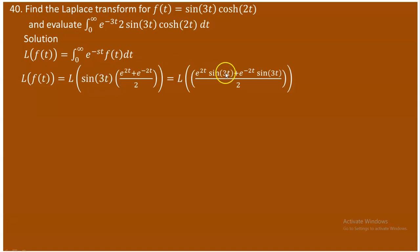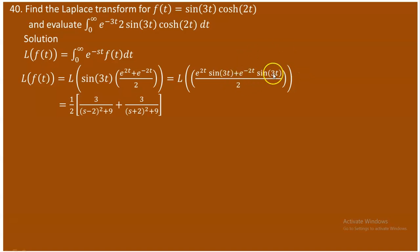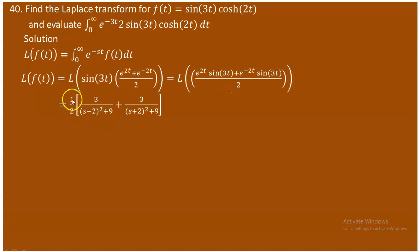Multiplying sine 3t through, we get e^(2t)·sin(3t) plus e^(-2t)·sin(3t), all over 2. Using the linearity property of Laplace transforms, we can split this into two separate Laplace transforms, pulling the constant 1/2 out. We need to know the Laplace of sin(3t) and then apply the shifting property.